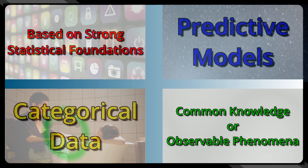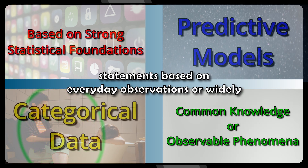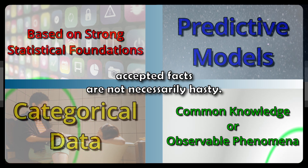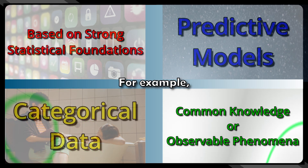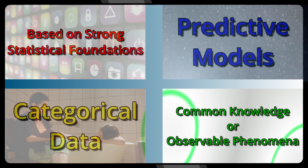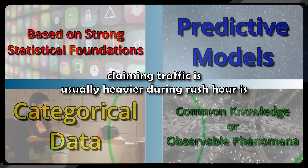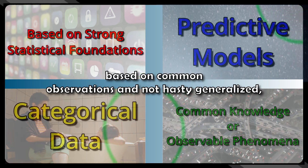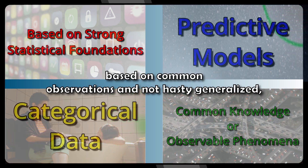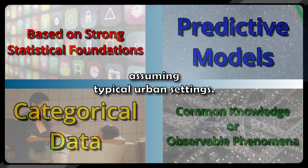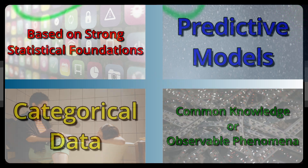And lastly, statements based on everyday observations or widely accepted facts are not necessarily hasty. For example, claiming traffic is usually heavier during rush hour is based on common observations and not a hasty generalization, assuming typical urban settings.